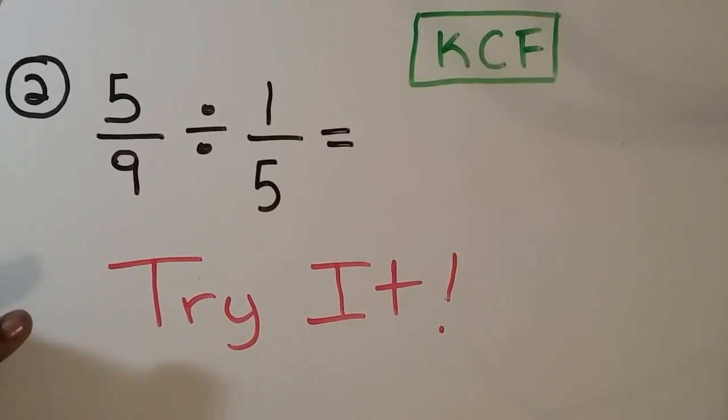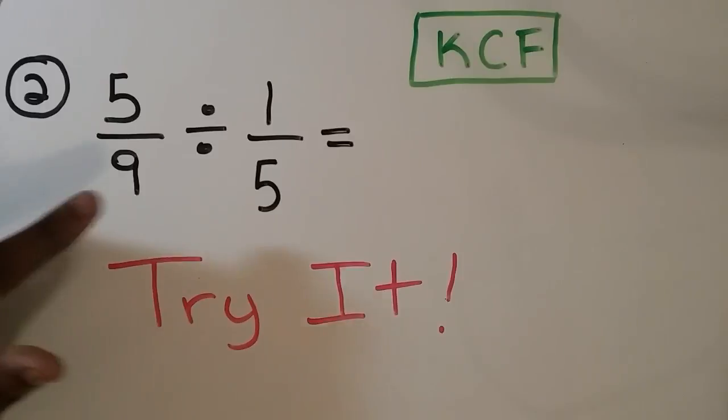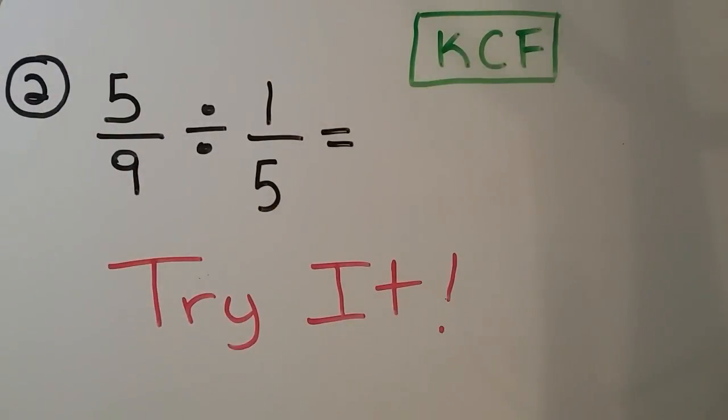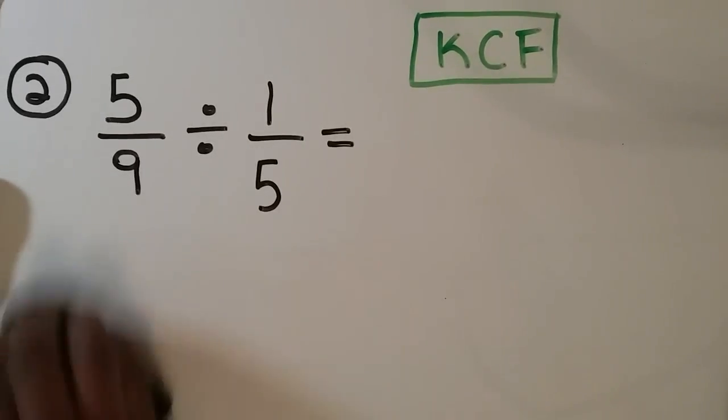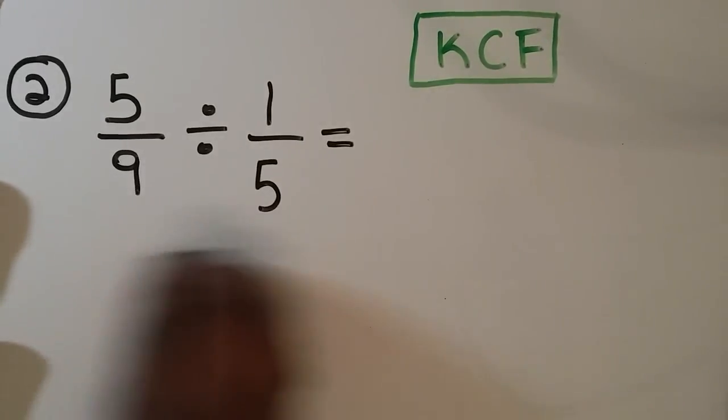Okay, you can try number 2 on your own. You're being asked to divide 5 over 9 by 1 over 5. So just pause now and give it a shot. Okay, we're going to work it out.